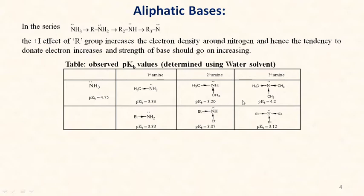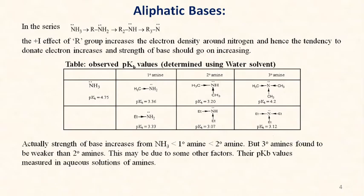Up to dimethyl amine the pKb value decreases, then it increases again. Similarly for ethyl, diethyl, and triethyl amine. Actually the strength of base increases from ammonia to primary amine to secondary amine, but tertiary amines are found to be weaker than secondary amines. This may be due to other factors.